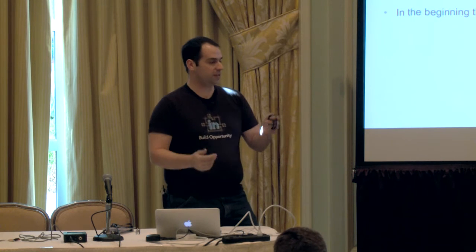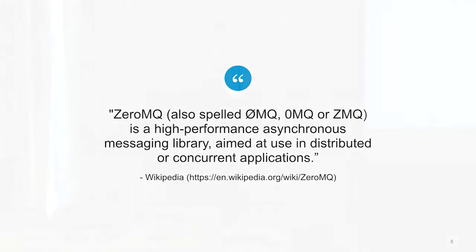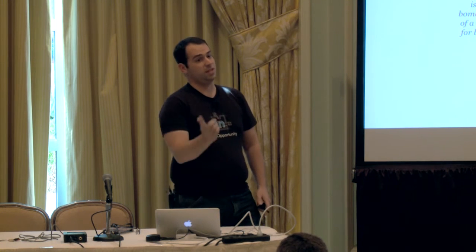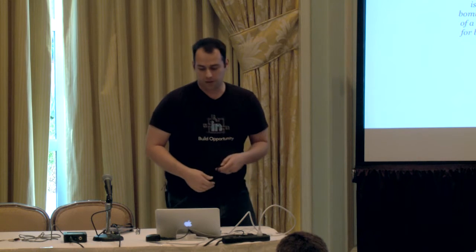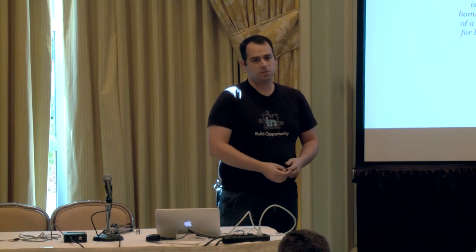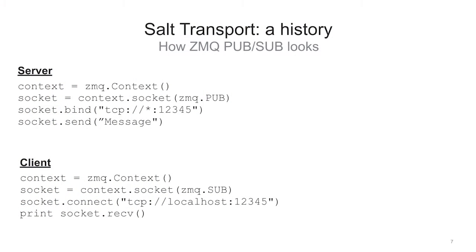Let's talk about what 0MQ is. From Wikipedia, it's a high-performance asynchronous messaging library for distributed and concurrent applications. If you go to 0MQ's page, they have an even longer explanation which is talking about cosmic rays from 1950s comic book people. Basically, what 0MQ is intending to do is make messaging easy. Before, you had to make a socket, serialize it, frame the messages, queue the messages — lots of annoying boilerplate code, so we wrap it up.